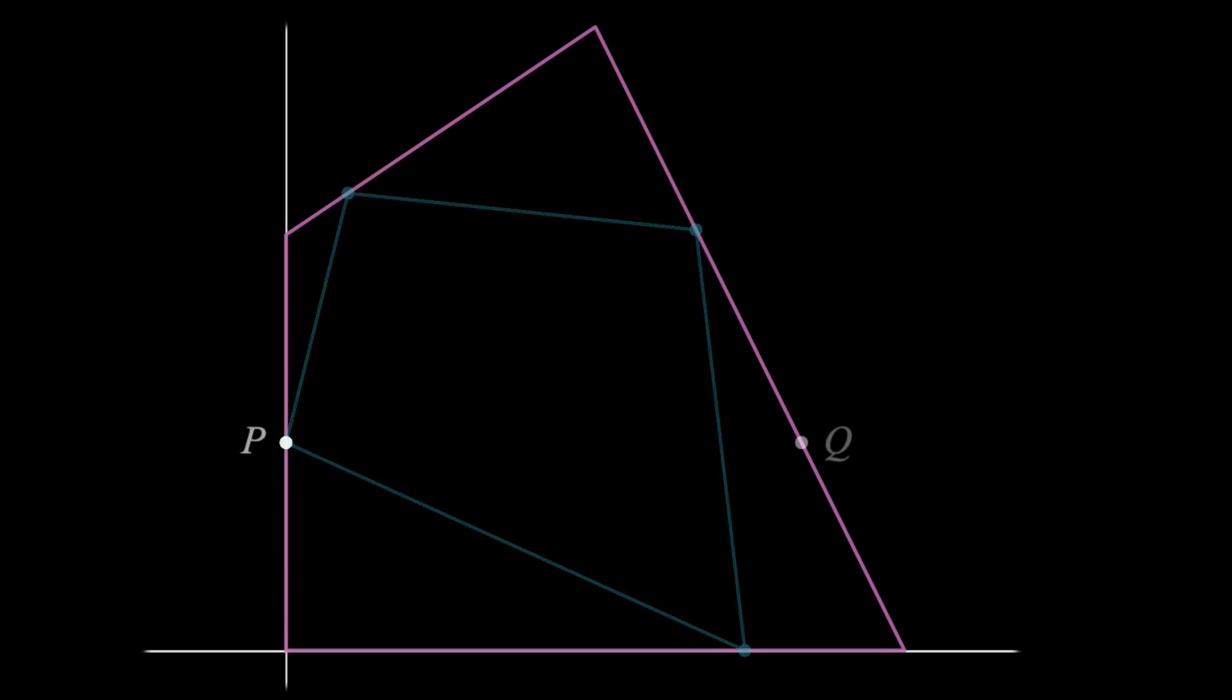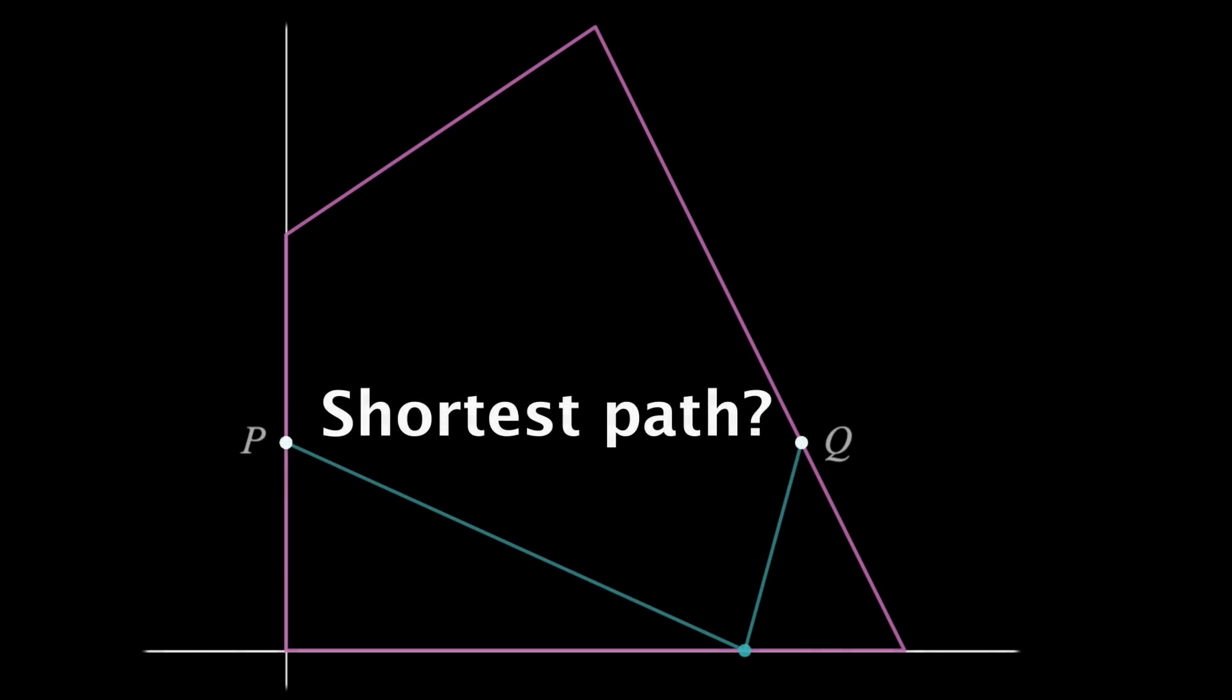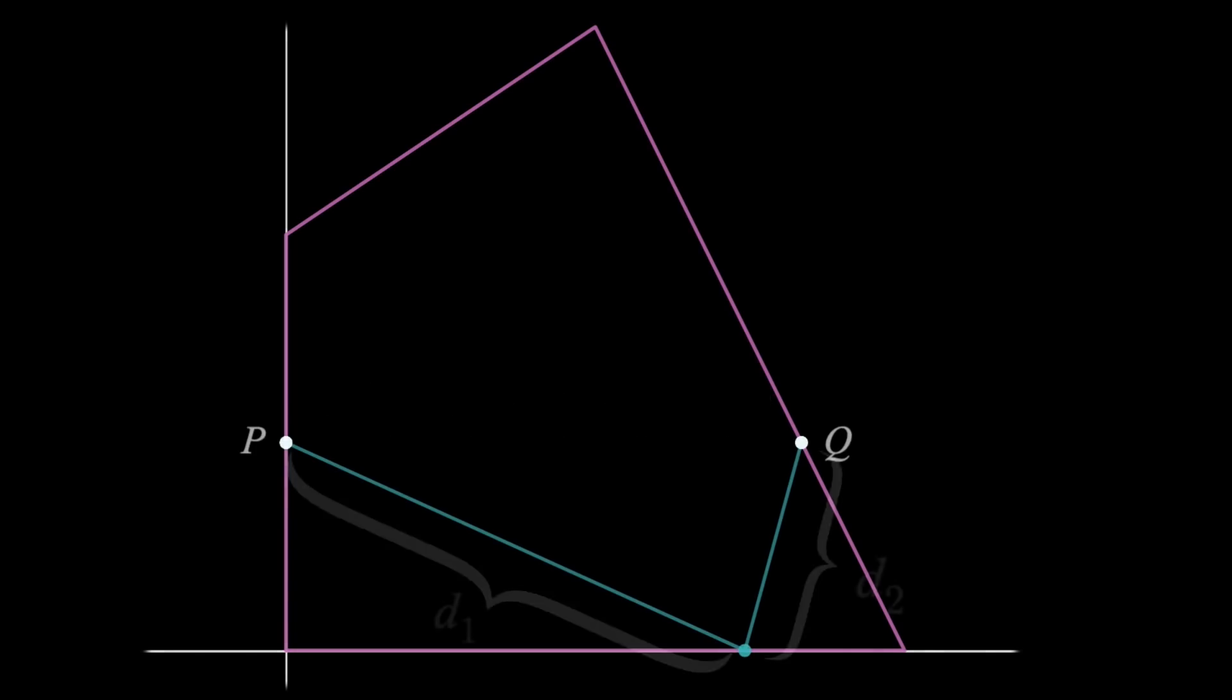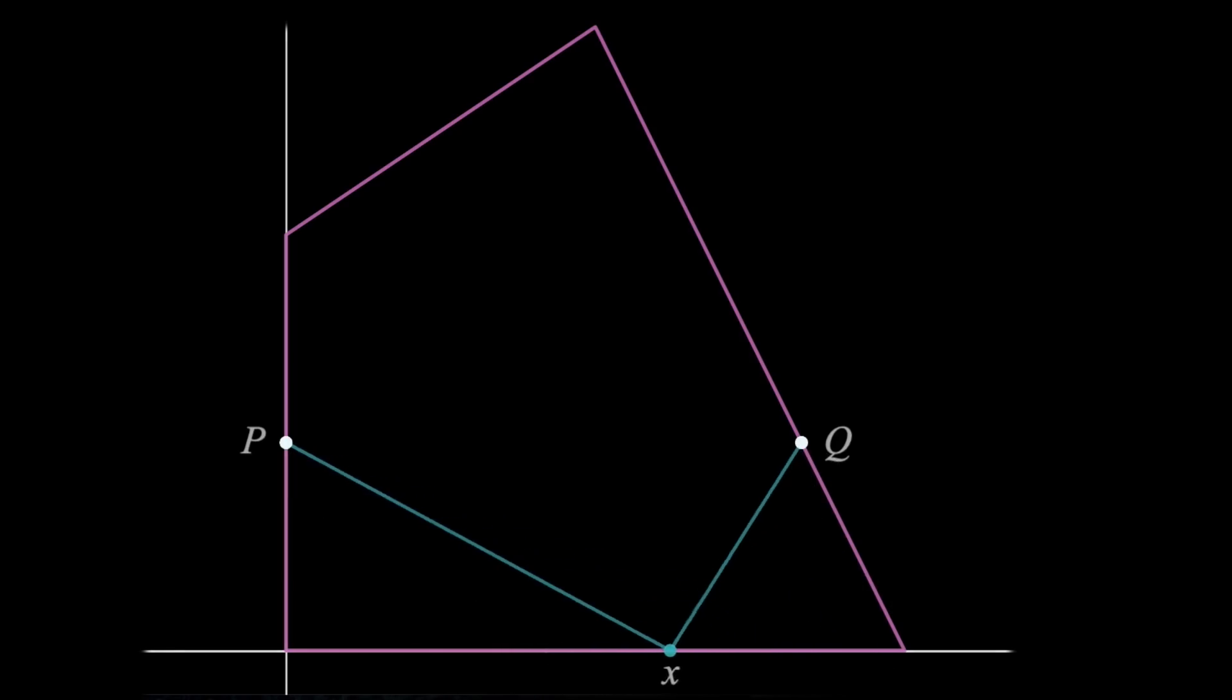If I put a point Q randomly on the right side, what is the shortest path that goes from P to the bottom side to Q? Well, we could make an equation for these distances as a function of this bottom point X, and use some calculus to find the X that creates an absolute minimum for the total distance.